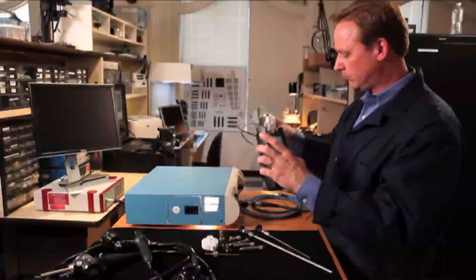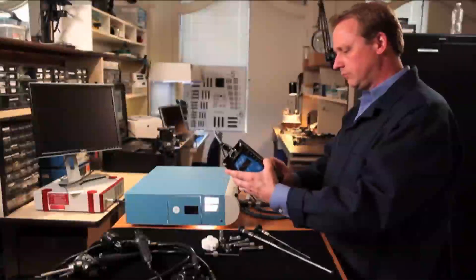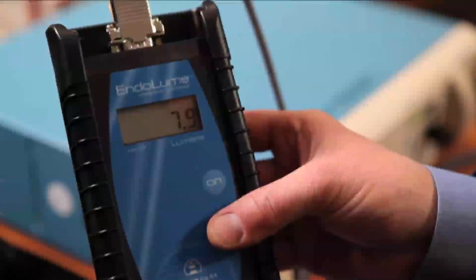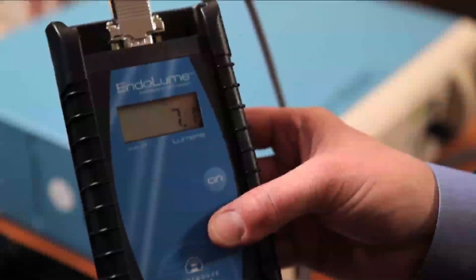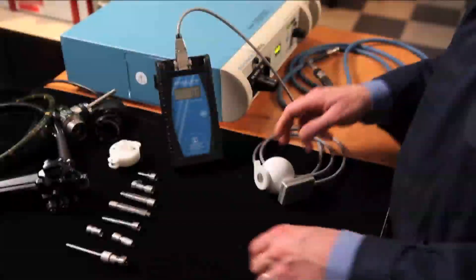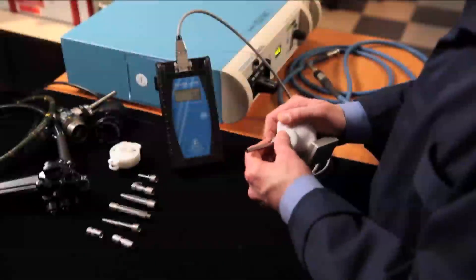Using the Endolume quantifies the amount of illumination at each step in the system. The Endolume is an easy-to-use device with a single button to turn on the device and run a test. The Endolume is a simple and intuitive tool to operate.